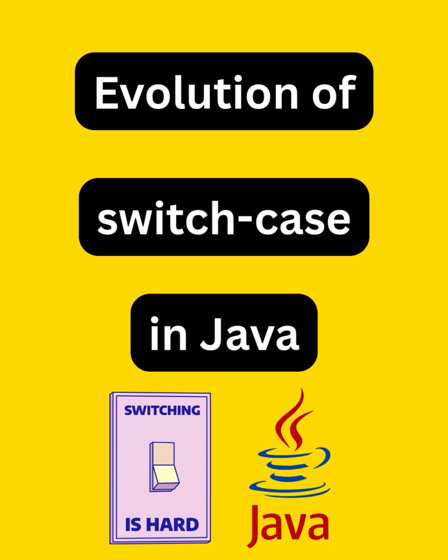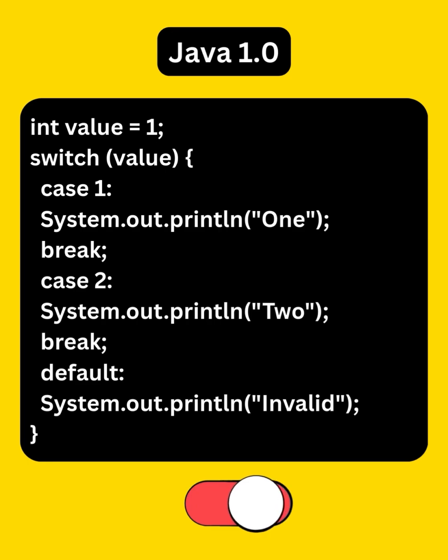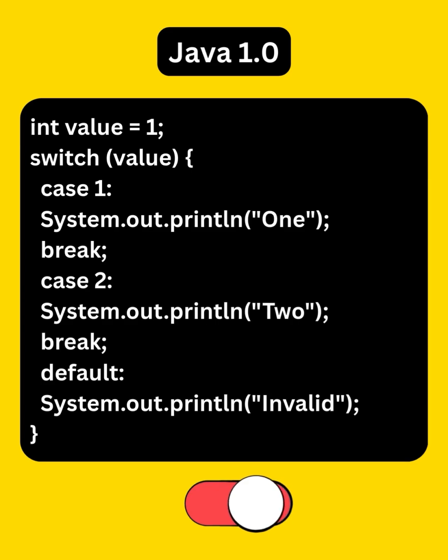Today, let's explore how the switch case evolved over the years in Java. The switch statement was introduced in Java 1 to replace nested if-else blocks for discrete value checks.